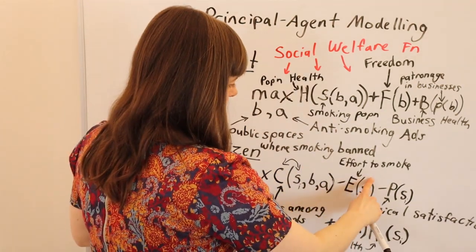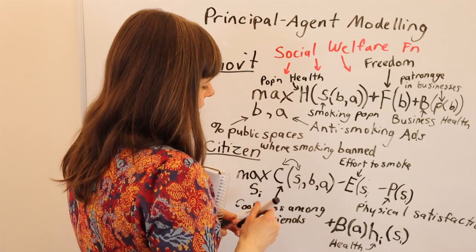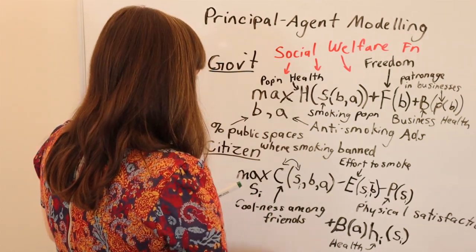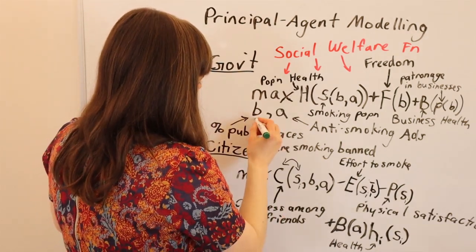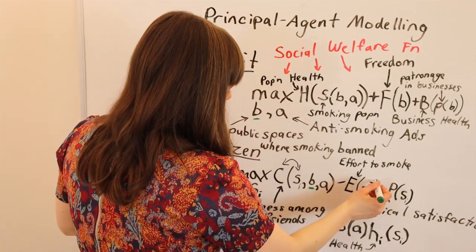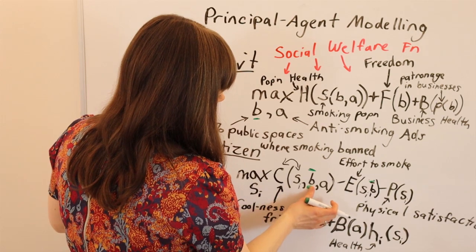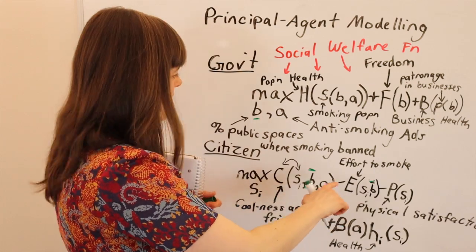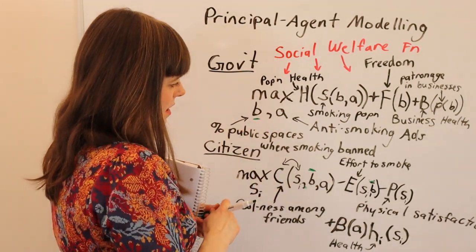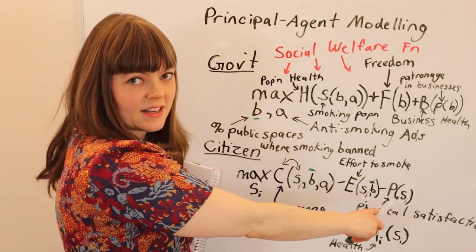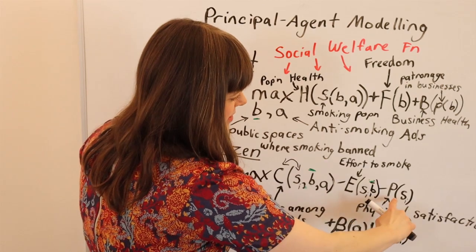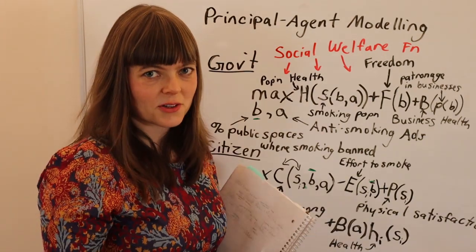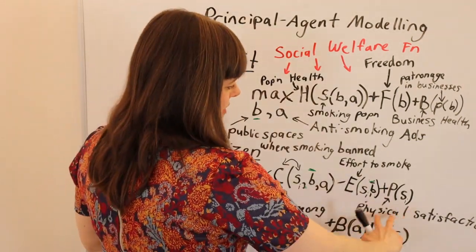Another factor is effort to smoke — banning smoking in public places affects this. So effort depends on how much you smoke and whether there's a ban in your area. B, the ban on smoking, appears exogenous in a couple of these terms. These might be key factors influenced when the government decides to ban smoking. There's also physical satisfaction from smoking — I need to include that with a plus sign, because that is one of the main reasons many people smoke.